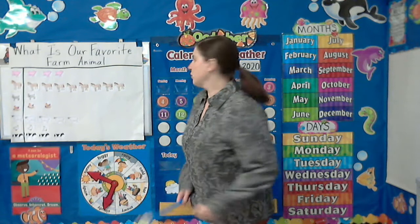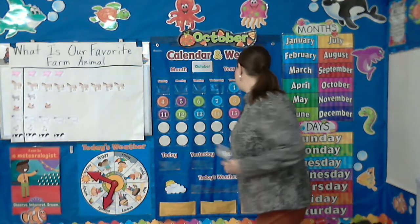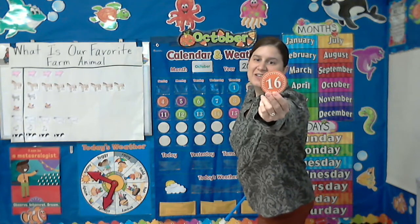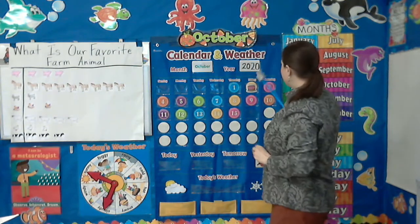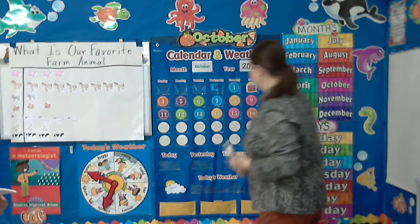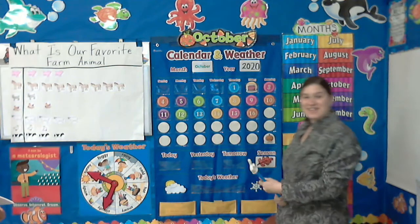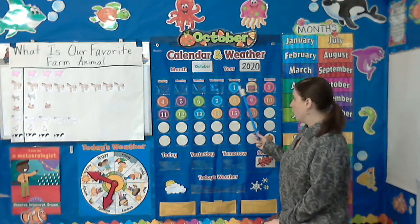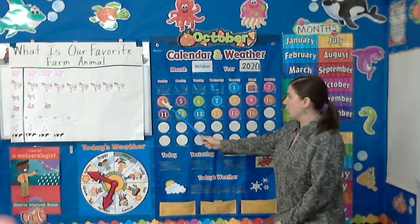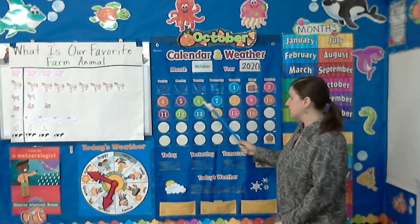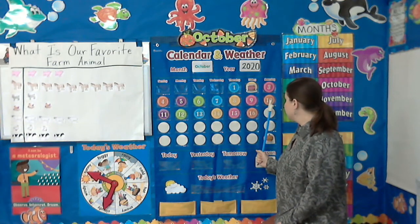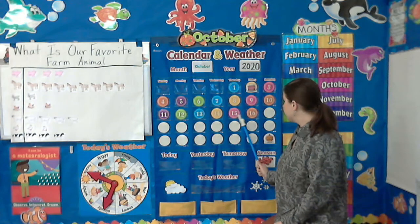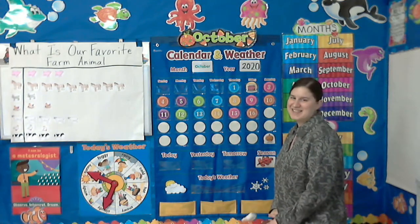Beautiful! All right, let's work on our calendar. Turn the date around — today I have the number 16, so it is October 16, 2020. Let's count how many days we've had in the month of October so far. Ready? 1, 2, 3, 4, 5, 6, 7, 8, 9, 10, 11, 12, 13, 14, 15, 16 — 16 days so far.